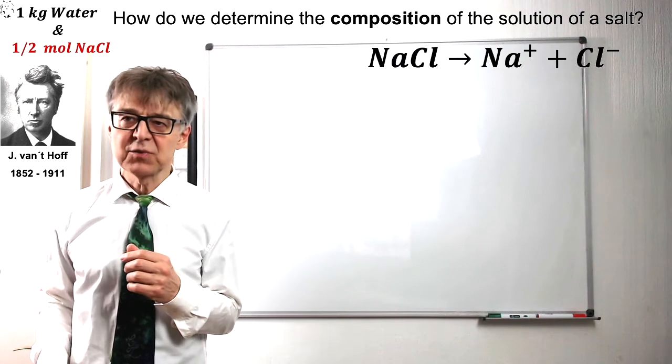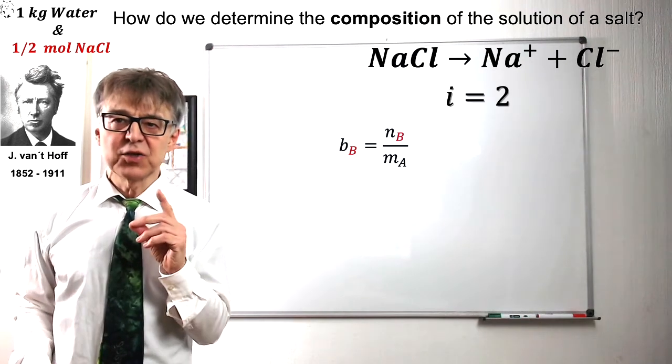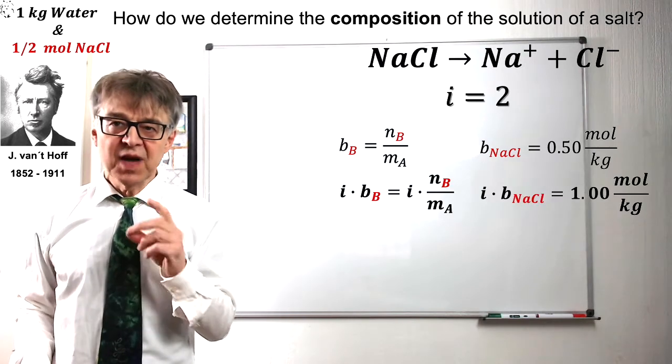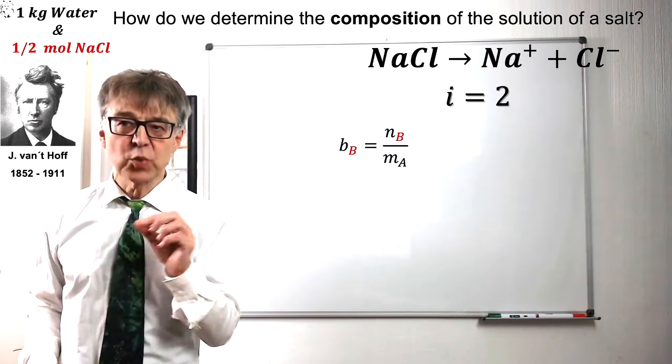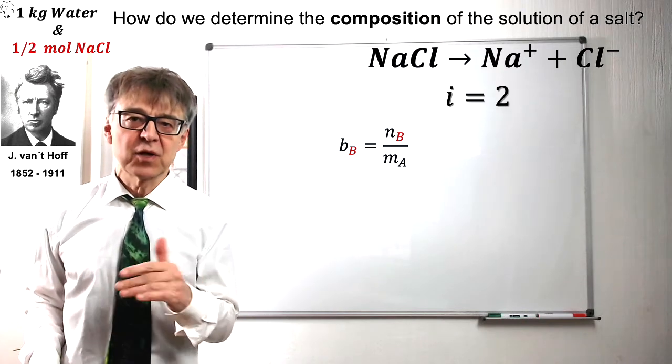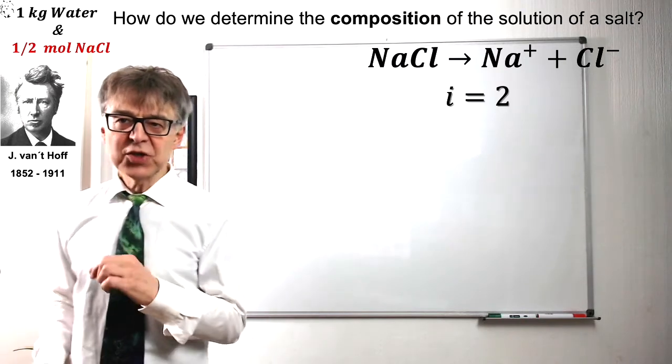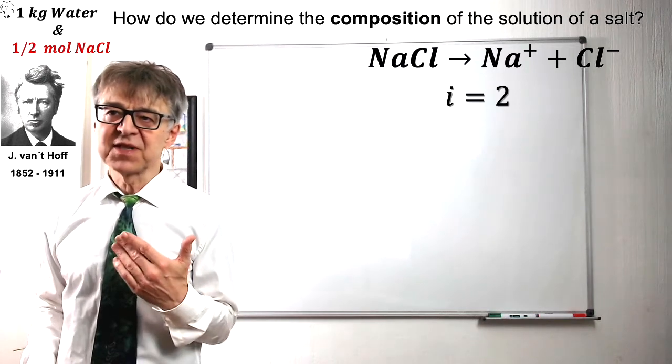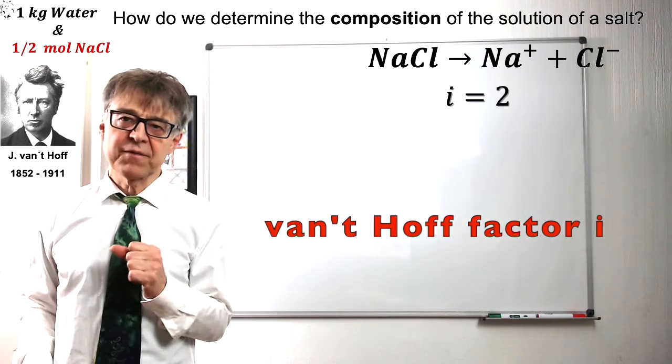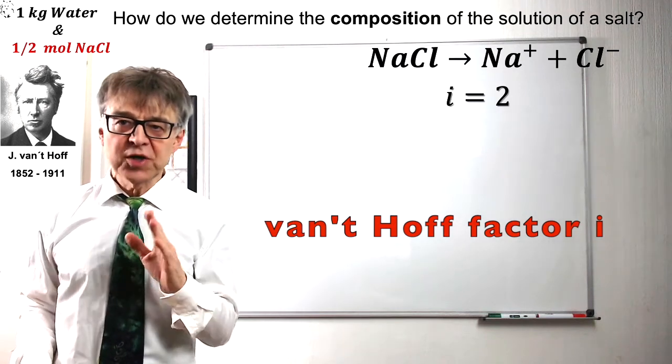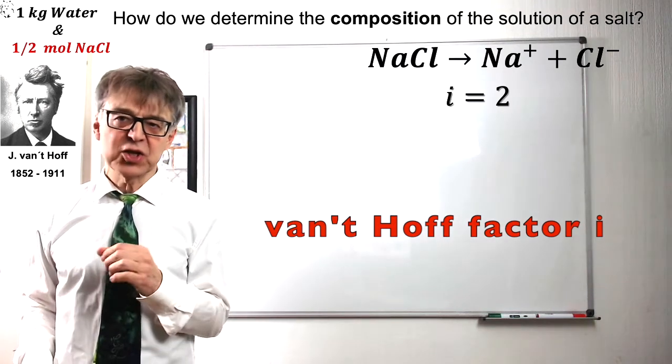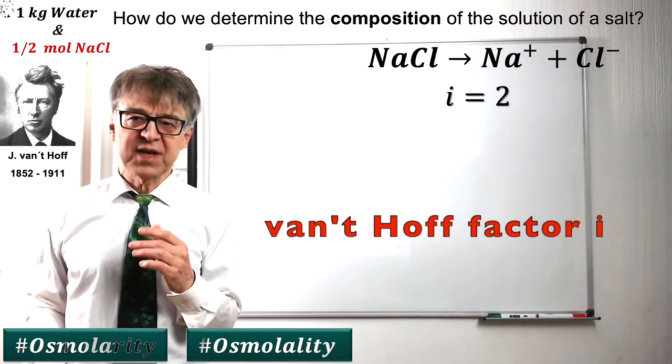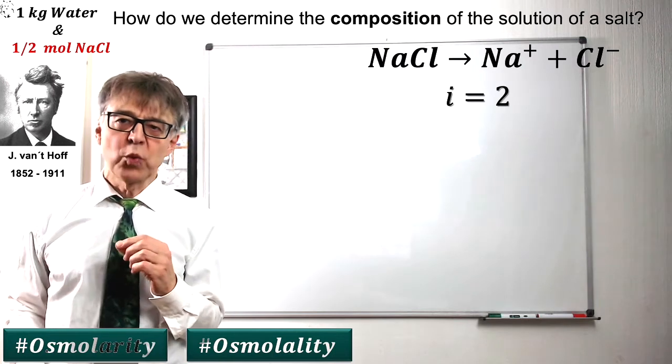Half a mole of table salt will dissociate in solution to one mole of particles, cations and anions. The number of dissolved particles is twice the amount of salt used. The relation between actually dissolved particles and originally dissolved amount of substance is called van't Hoff factor i. In order to quantify the number of particles in the specification of concentration, the so-called osmolarity and osmolality were introduced.